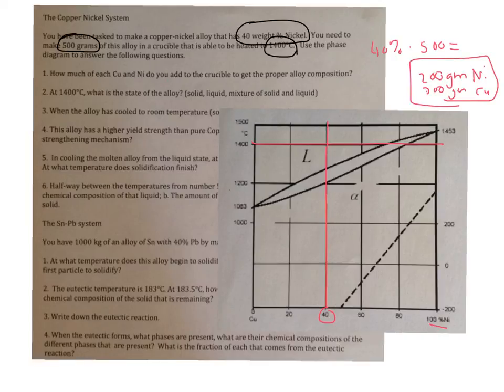And then next, at this temperature, 1400, what is the state of the alloy? So you can see that this composition, 40 weight percent nickel, when you're at 1400 C, these lines intersect in the liquid phase region. So the answer to that one would be that it is a liquid state.